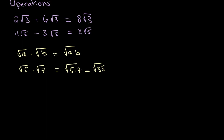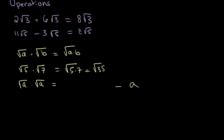One thing we should note is that when we multiply any surd by itself — so square root of a multiplied by square root of a — we get the square root of a squared, which is simply equal to a.